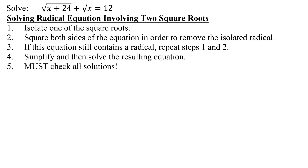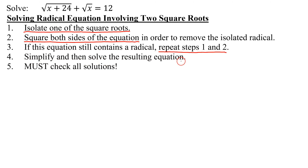Let's look at the steps for solving these types of equations. Step one says you must isolate one of the square roots. Then you're going to square both sides of the equation in order to remove the isolated radical. If this equation still contains a radical, then you have to repeat steps one and two. Finally, when you have an equation that has no square roots in it, you simplify and solve the resulting equation. But please don't forget, you must check for extraneous solutions.